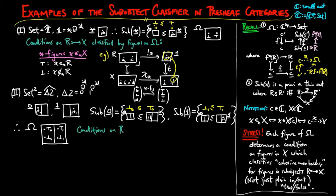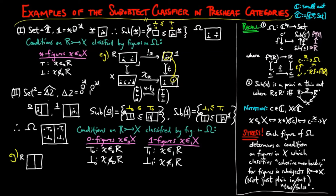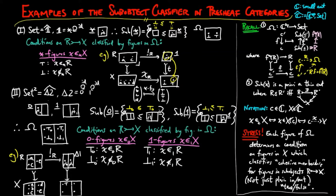The condition on a sub-object R of X classified by figures in Ω comes in two levels. For zero-figures, if little x is a zero-element of X, then either x is a zero-element of R or it's not. Similarly, for one-figures, either little x is a one-element of R or it's not. For example, if X is the Set² container with a, b, c in the zero compartment and d, e in the one compartment, and R is the sub-object with a, c in the zero compartment and e in the one compartment, then χ_R takes zero-elements a, b, c to true, false, true, and one-elements d, e to false, true.